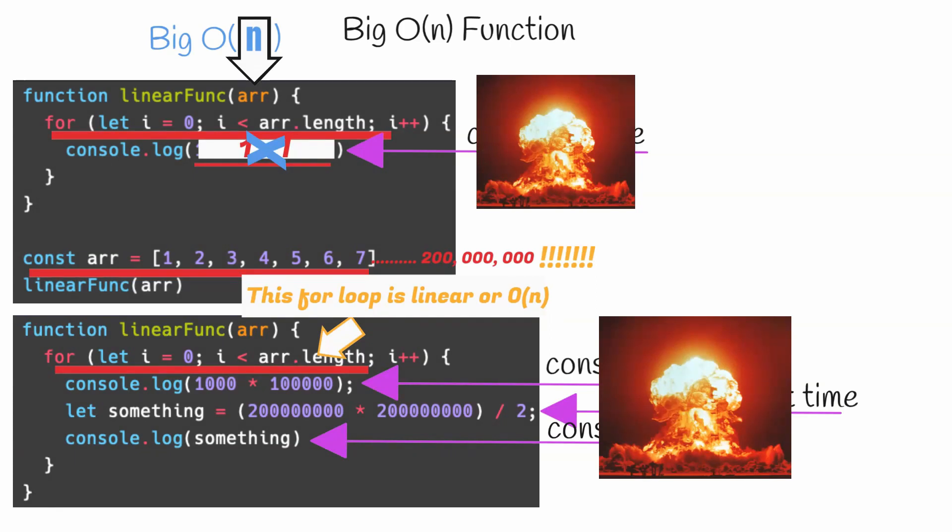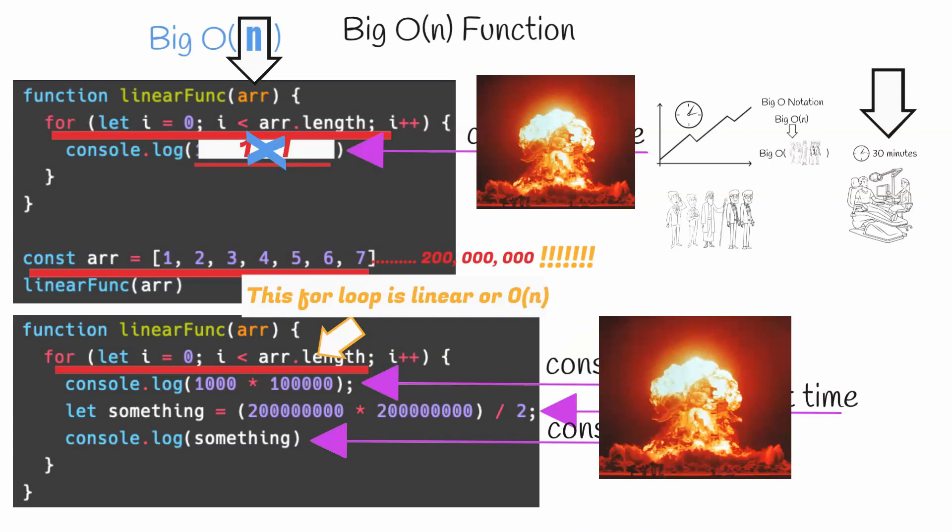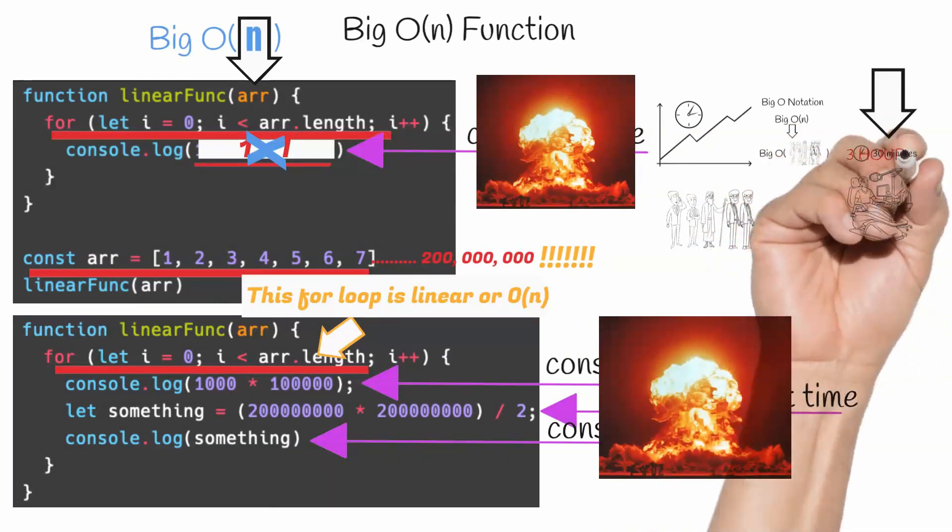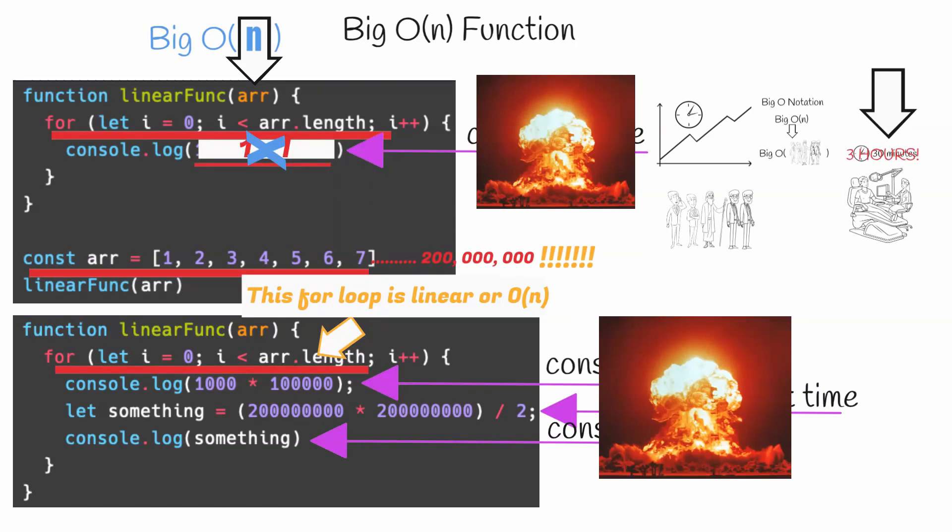Similarly, if we think back to our dentist example, we see that she took 30 minutes per patient. But even if she took three hours per patient, the amount of time it takes her to see all of her patients will still scale linearly. This can be difficult to grasp at first, but it starts to make sense over time.